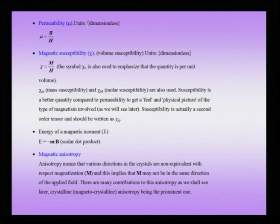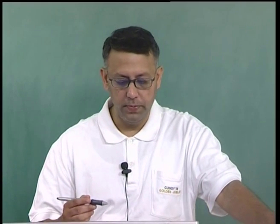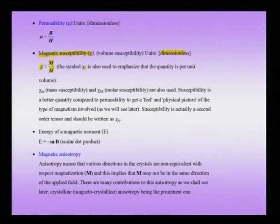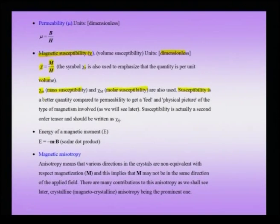Another important quantity is the magnetic susceptibility chi, which is dimensionless and is the ratio of M to H — the magnetization produced by an external magnetic field H. It represents the response of a material to an externally applied field. A subscript v is sometimes added to emphasize volume susceptibility, distinguishing it from mass susceptibility and molar susceptibility. Susceptibility is a very useful quantity for comparing different kinds of magnetic phenomena and getting a physical picture of the type of magnetism involved.